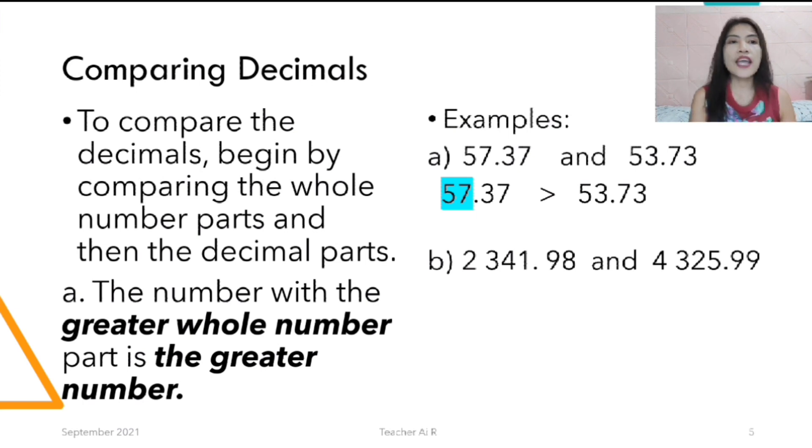Next one. We have 2,341.98 and 4,325.99. Which one is bigger between the 2,341 and the 4,325? Yes, the bigger one is the 4,000. So when you are supposed to put the symbols, it would be 2,341.98 is less than 4,325.99.